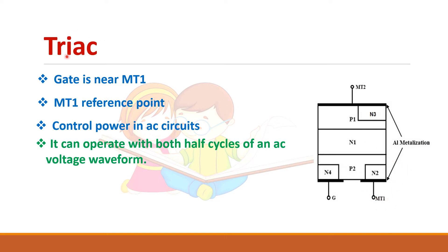This TRIAC — as the name suggests, AC — is used in AC circuits, especially to control the power in AC circuits. It can operate in both the positive and negative half cycles of the AC voltage waveform because it is bi-directional.